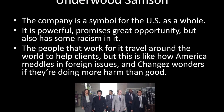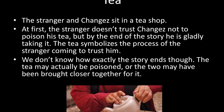In terms of analysis, the first important symbol is Underwood Samson, the company Changez works for. It is a symbol for the US as a whole — it is powerful, promises great opportunity, but also has racism within it. Those absorbed into Underwood Samson have to shed significant parts of their identity to fit in, and the people who work for it travel the world to help clients, much like America meddling in foreign issues. Tea is another important symbol. The stranger initially doesn't trust Changez not to poison his tea, but by the end of the story he is gladly drinking it — symbolising growing trust. The story ends abruptly, and the tea may actually be poisoned, or the two may have been brought closer by Changez's story.